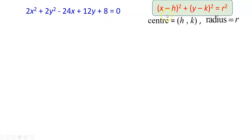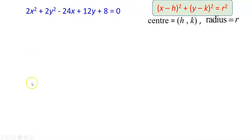By looking at the standard form, we know that the center of the circle will be (h, k), and the radius of the circle will be r. So I'm going to convert this general form of the equation of the circle into standard form, so that I can determine the center and the radius of the circle easily.